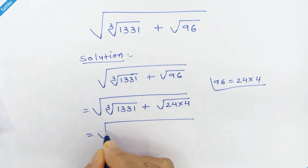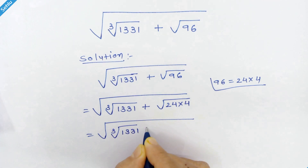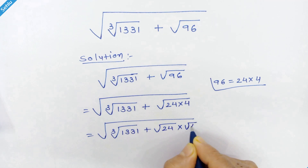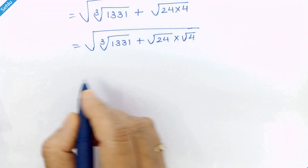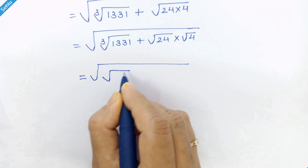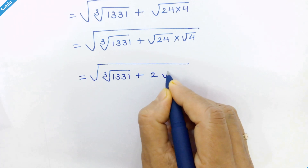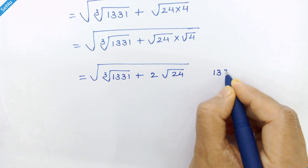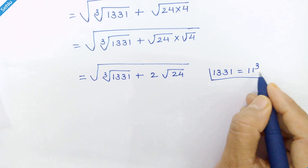In the next step we can write it as square root of 24 times square root of 4. Now square root of 4 is 2, so we have 2 times square root of 24. Do you know what 1331 is? It is 11 cubed, so we will put this in place.